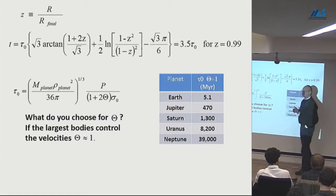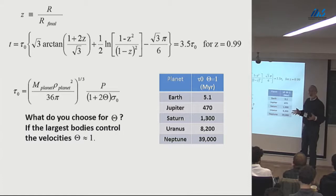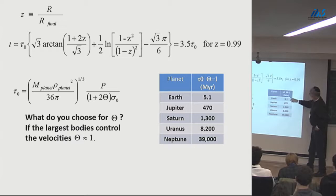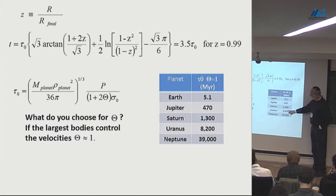What do you choose for theta? Safronov argued that the random velocity must be due to gravitational interactions between the planetesimals — they're stirring each other. So you would expect the random velocity to be roughly the escape velocity from the biggest particle, which is not much bigger than anything else, and theta ought to be around 1. Plugging in: the Earth can be done in about 5 million years, which doesn't seem terrible. Saturn takes over a billion years, and Uranus and Neptune can't be made in the lifetime of the solar system. That's a problem.